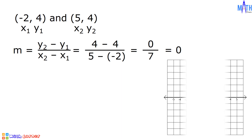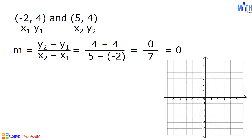If we plot these two points in a Cartesian plane, (-2, 4) is located here. From 0, we will move 2 units to the left and 4 units upward. The line passing through these two points is a horizontal line.